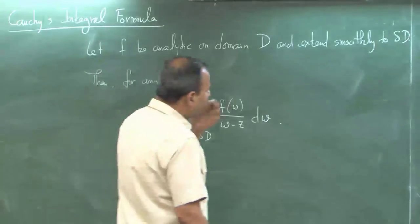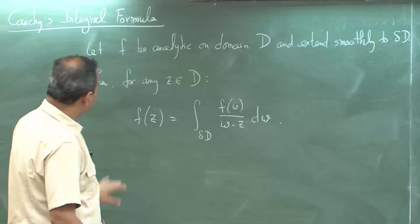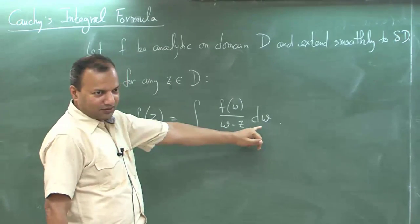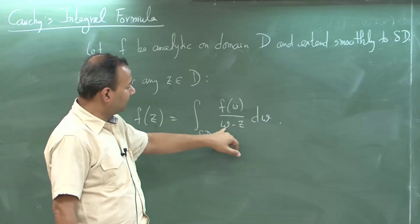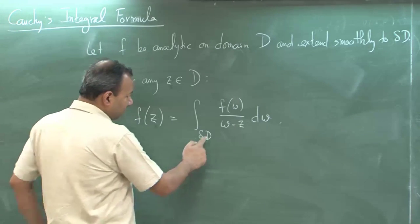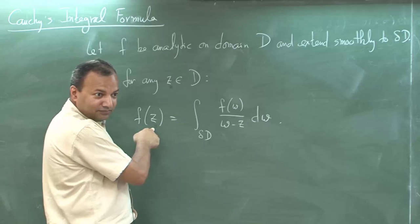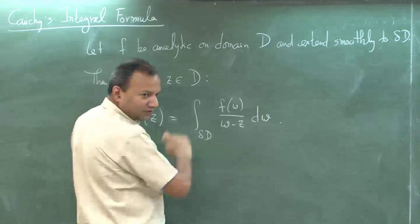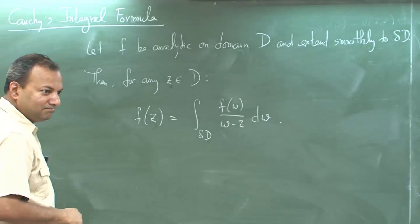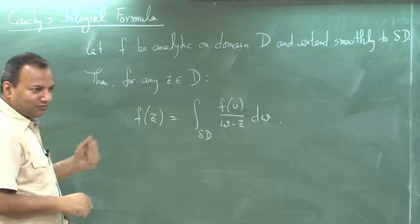If f is analytic on domain D and extends smoothly to the boundary — this is a very standard assumption we are always going to make — then for every point z inside the domain D, f(z) equals the integral over the boundary of D of f(w) divided by (w − z) dw. It is very interesting that the integral over the boundary determines the value inside, and in a very simple fashion: all you need to do is divide f by (w − z). The proof almost immediately flows out of Cauchy's theorem.